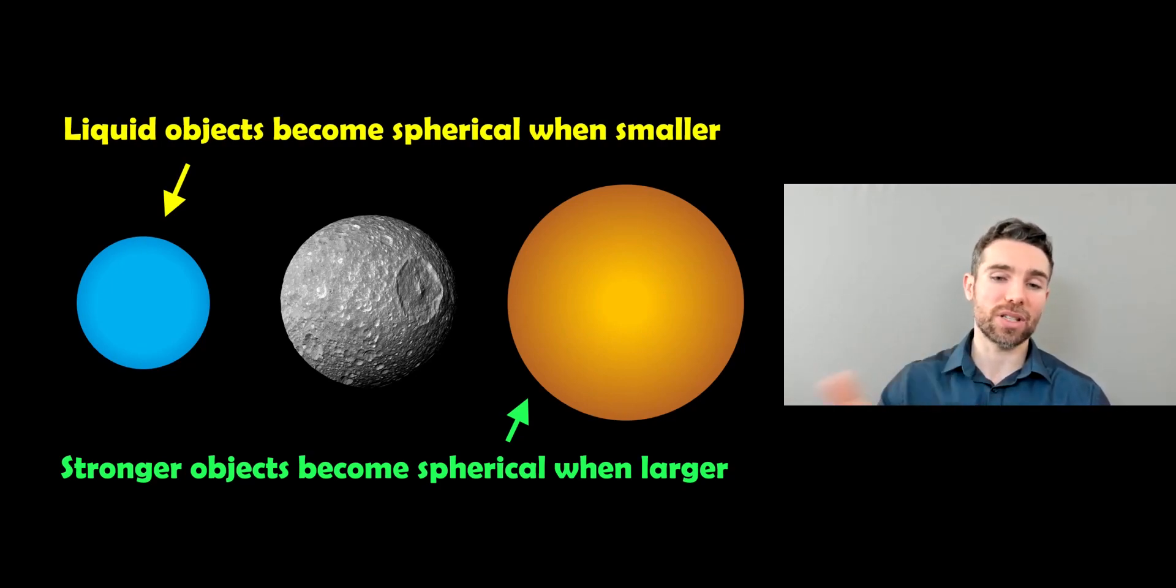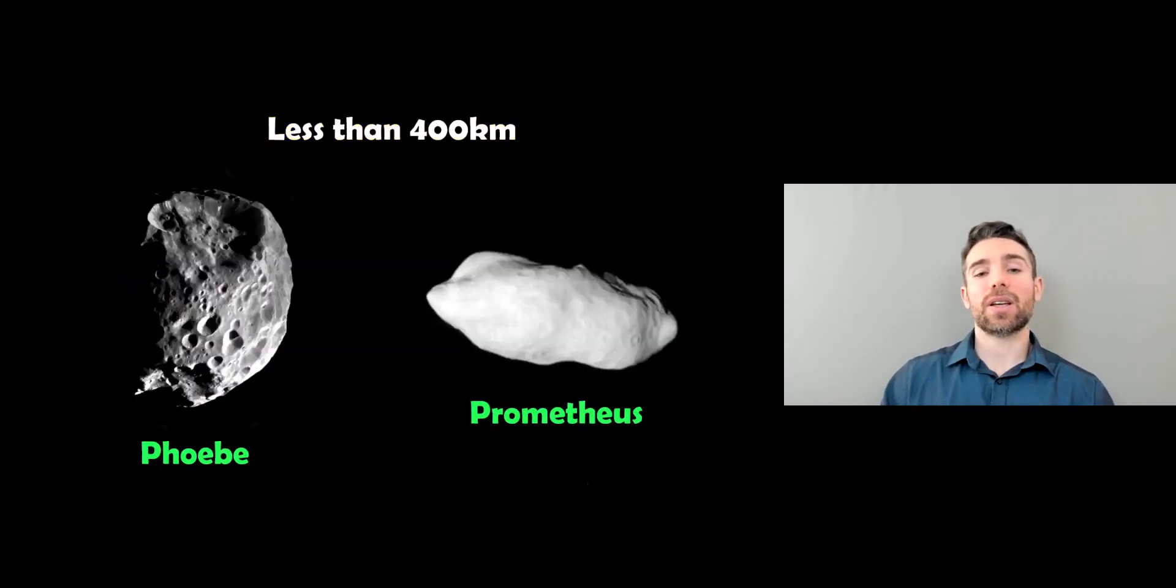Mimas is there because it's an icy object and it sits about 400, but it could be less and it could be more depending on what it's actually made from. Now these are some objects that are less than 400 kilometers in size. Phoebe and Prometheus are both moons of Saturn and they look like potato shaped really, they're not spherical, they're just not big enough to have enough gravitational force to mold them into a spherical or rounder shape.